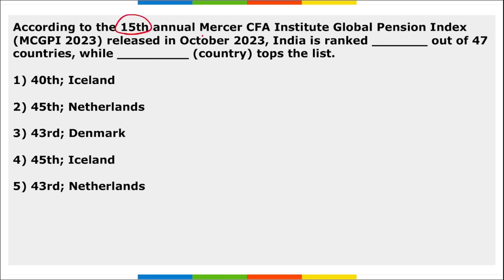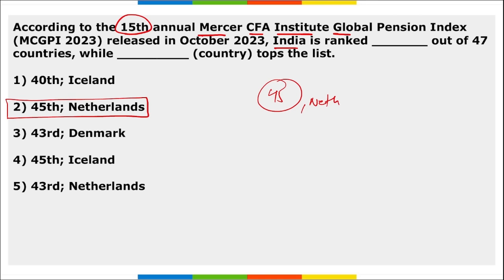According to the 15th annual Mercer CFA Institute Global Pension Index, India is ranked 45th and the country that secured the top position is Netherlands — right option is option two.